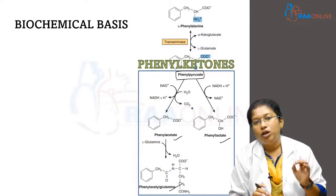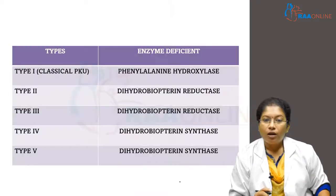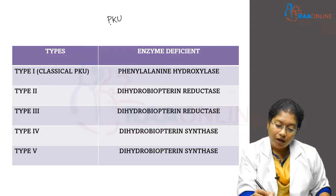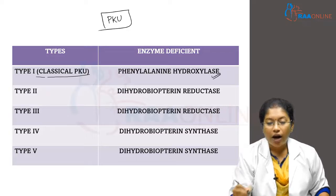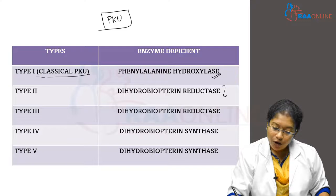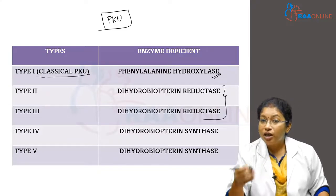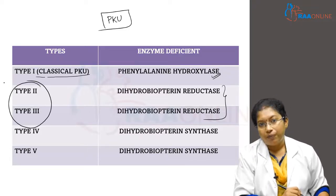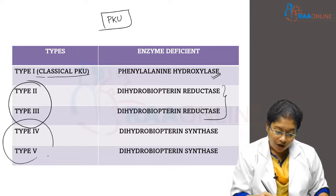There are various types of phenylketonuria. The classical type is due to phenylalanine hydroxylase deficiency. When dihydrobiopterin reductase is deficient or functionally inactive, it leads to type 2 and type 3 PKU. When dihydrobiopterin synthase is defective, it leads to type 4 and type 5 phenylketonuria.